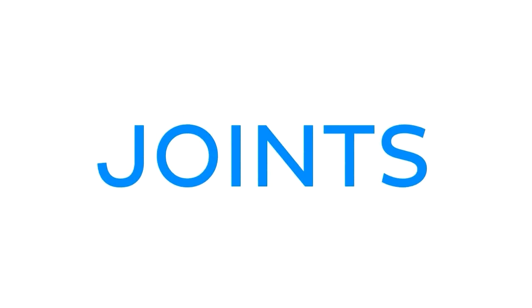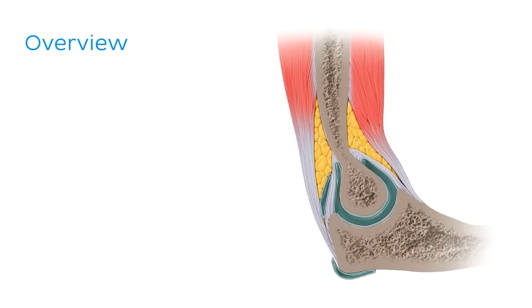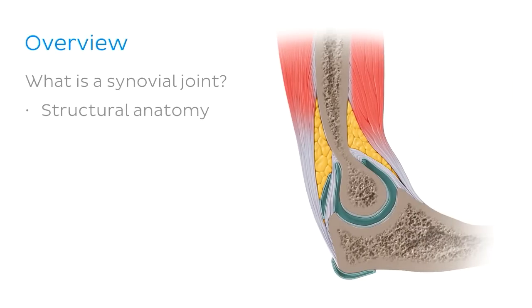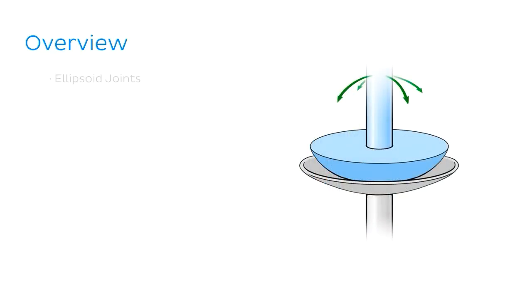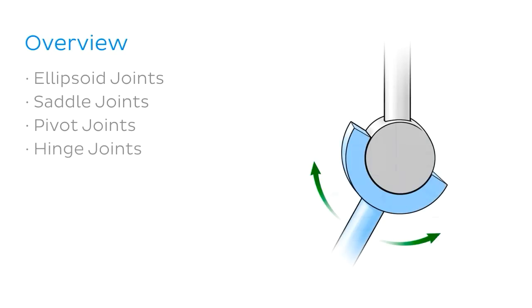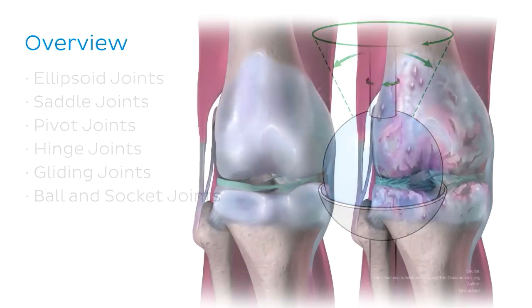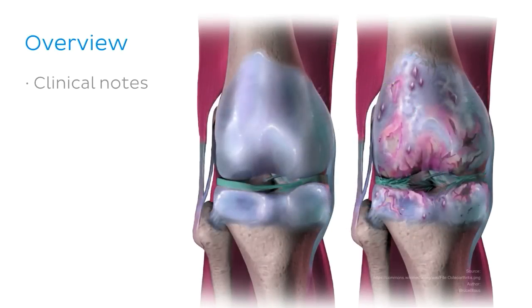More specifically, we're going to be looking at synovial joints and the types of synovial joints in your body. We'll start with the structural anatomy of a synovial joint, then dive into the types: ellipsoid joints, saddle joints, pivot joints, hinge joints, gliding joints, and ball and socket joints. We'll wrap up with a clinical scenario to illustrate why these joints are so important.